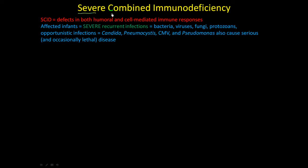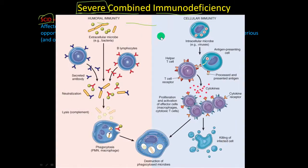Next we'll talk about severe combined immunodeficiency, SCID. It's a severe case — the acronym is SCID. It involves defects in both humoral and cell-mediated immune responses. For humoral immunity, there's a picture from Robbins Basic Pathology, 8th edition.